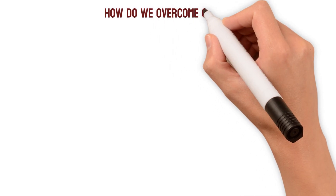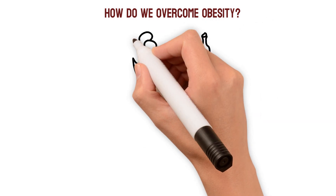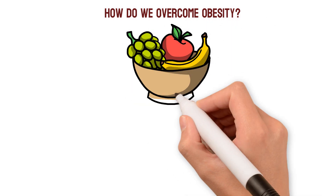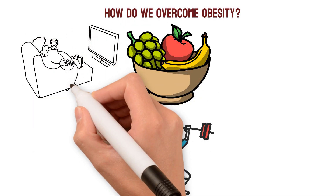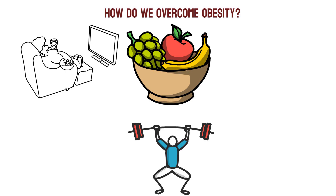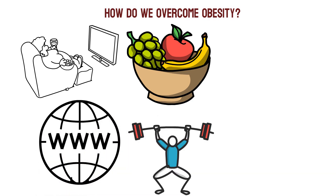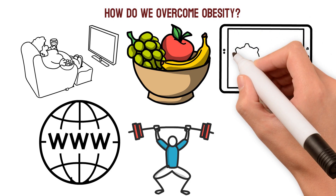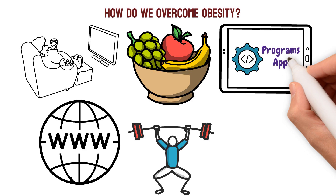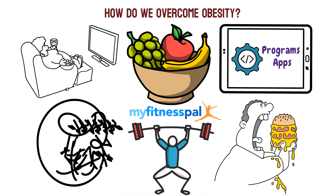How do we overcome obesity? We can overcome obesity by making small changes to our lifestyle. This includes things like eating healthy foods, being more physically active, and reducing the amount of time we spend engaged in screen-based activities. Making these changes can be difficult, but there are a number of resources available to help. There are websites dedicated to obesity prevention that provide tips and resources for healthy weight management. There are also many programs and apps that can help you track your food intake and physical activity levels. MyFitnessPal is one example of an app that can help you reach your goals.